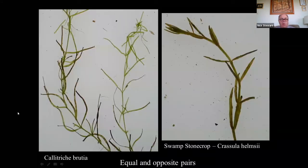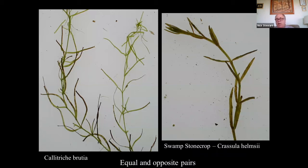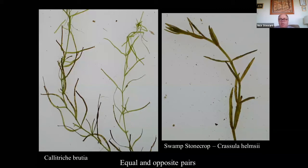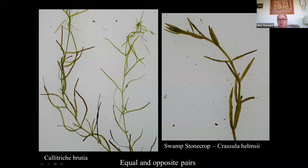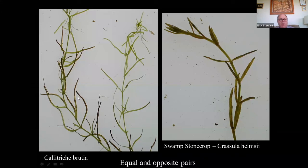Water starworts always have the leaves regularly in twos — two equal ones in equal and opposite pairs. Whereas horned pondweed tends to have two or three or variable numbers of leaves of different lengths. The only other aquatic plant with leaves in equal and opposite pairs is the pest species swamp stonecrop. The difference is that the leaves of water starworts have little notches in the tips, whereas swamp stonecrop has pointed tips. That is a very characteristic feature of water starworts: all of them have at least truncate tips or notches in the tips, combined with equal and opposite pairs of leaves.